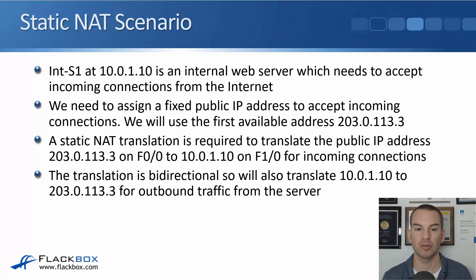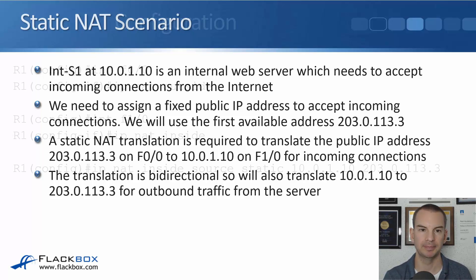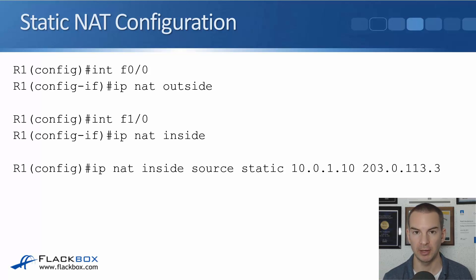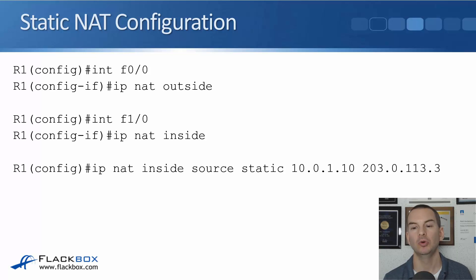We're using a private IP address on the inside of 10.0.1.10, so we need to configure a static permanent NAT translation to translate public IP address 203.0.113.3 on the outside Fast0/0 interface to 10.0.1.10 on the inside Fast1/0 interface. The translation is bidirectional — we configure it for traffic coming from the outside to the inside, and the static NAT rule also takes care of the outgoing traffic. On R1, first we specify which interface is the outside and which is the inside: interface Fast0/0 — ip nat outside; interface Fast1/0 — ip nat inside. Then we configure the static NAT translation: ip nat inside source static 10.0.1.10 203.0.113.3. That's the whole config.